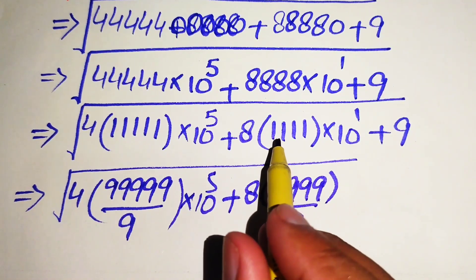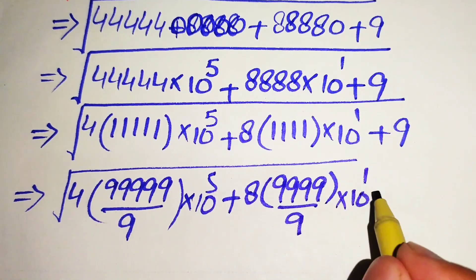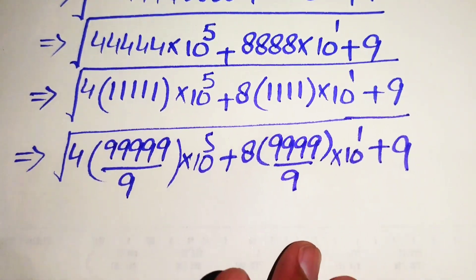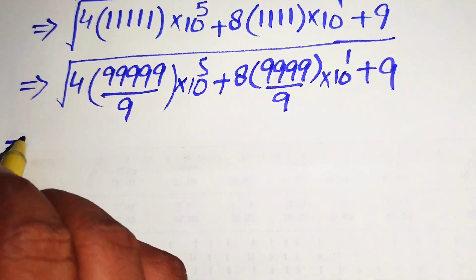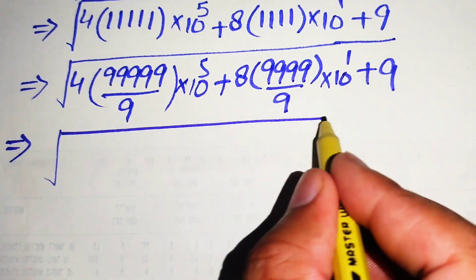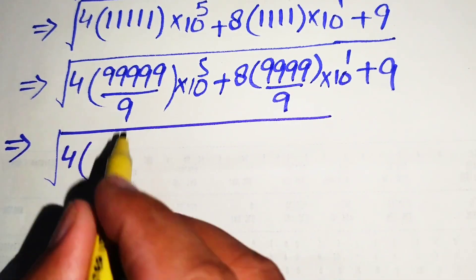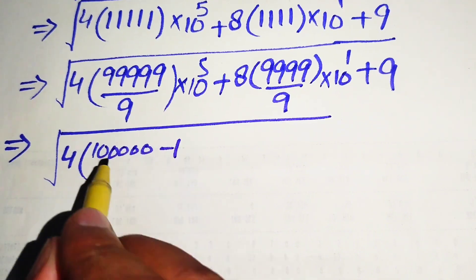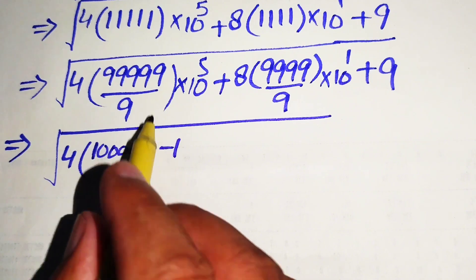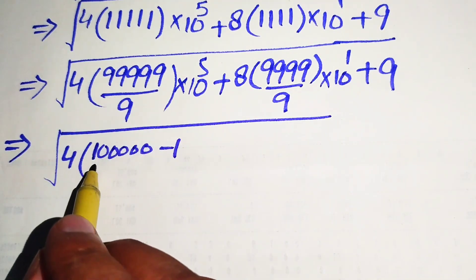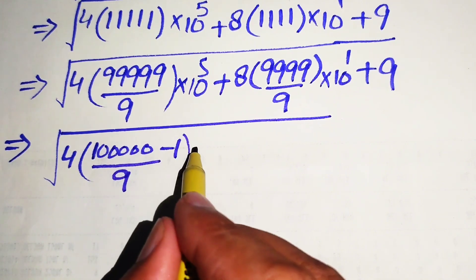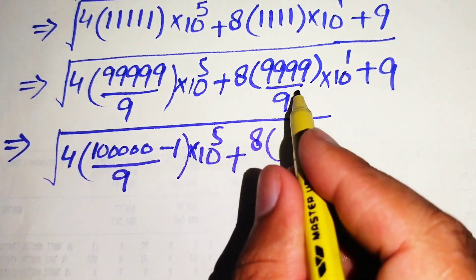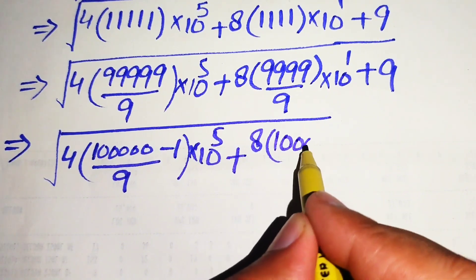When we divide these two numbers we get 4 times of 10 raised to power 1, plus 9, and its whole square root. After this step, we write the expression as square root of 4 into 1 into 5 zeros minus 1, because when we subtract by minus 1 we get 5 times of 9, and this whole is divided by 9, multiplied by 10 raised to power 5. Plus here we have 8 and we write this as 1 into 5.